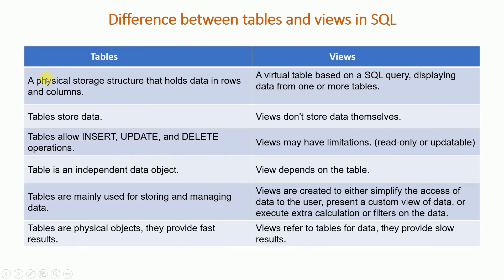In a relational database management system, the data is stored in a table in the form of rows and columns. Whereas a view is a virtual table which is based upon an SQL query, used for displaying the data from one or more tables. So a table is a physical storage whereas a view is a virtual table.